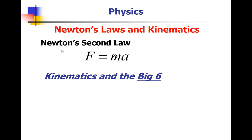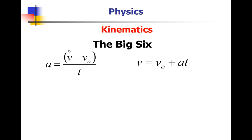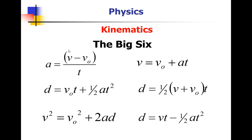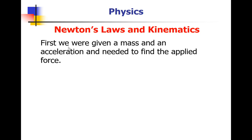Let's now take Newton's second law and add kinematics in the big six. You remember the big six equations for kinematics. We've used these in the last chapter. We'll be applying those now to what we have with Newton's law. We started with a given mass and an acceleration, and we're told to find the applied force. No problem. F is MA.